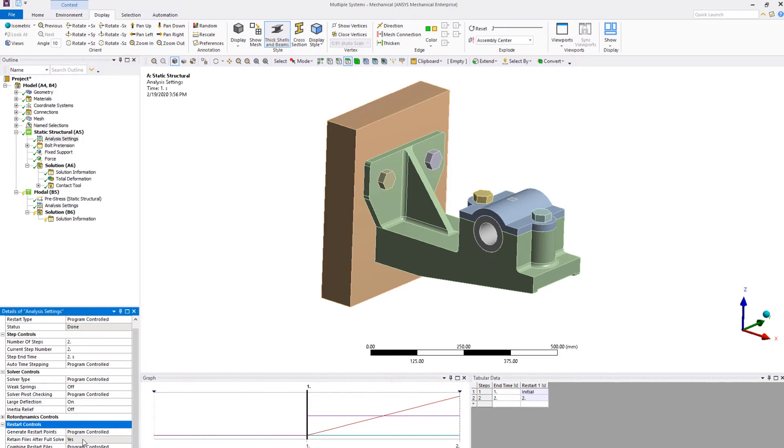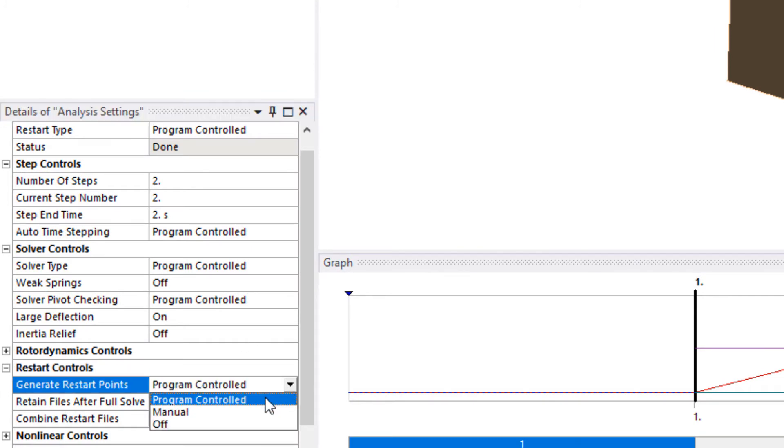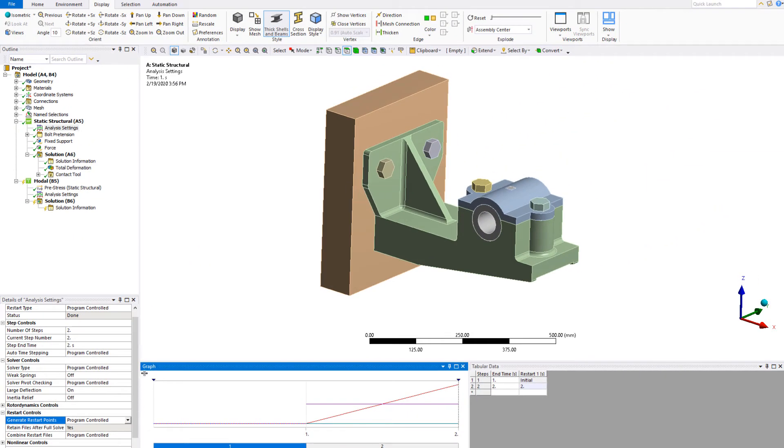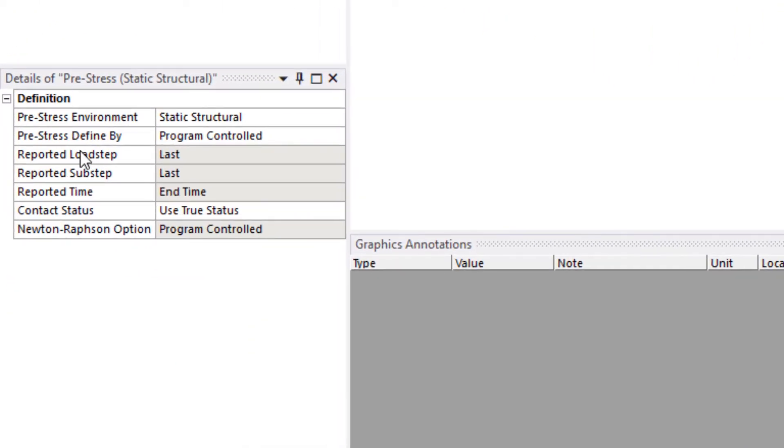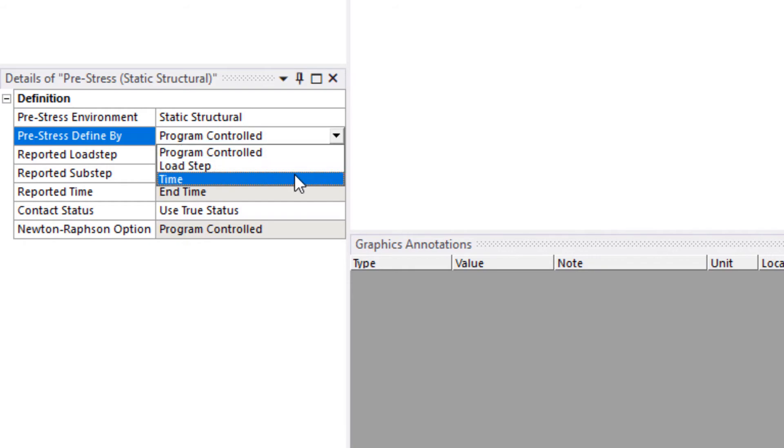In the base analysis, we can set up restart controls in order to generate tangent stiffness matrix. Any point from a static or transient analysis can be perturbed. Just make sure you have restart files for that point.